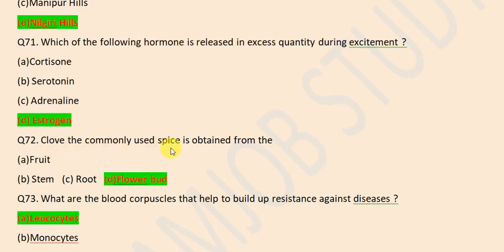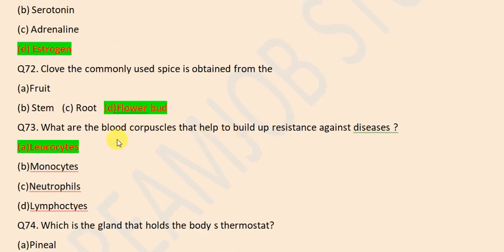Clove, the commonly used spice, is obtained from the flower bud. What are the blood corpuscles that help to build up resistance against diseases? Leukocytes.